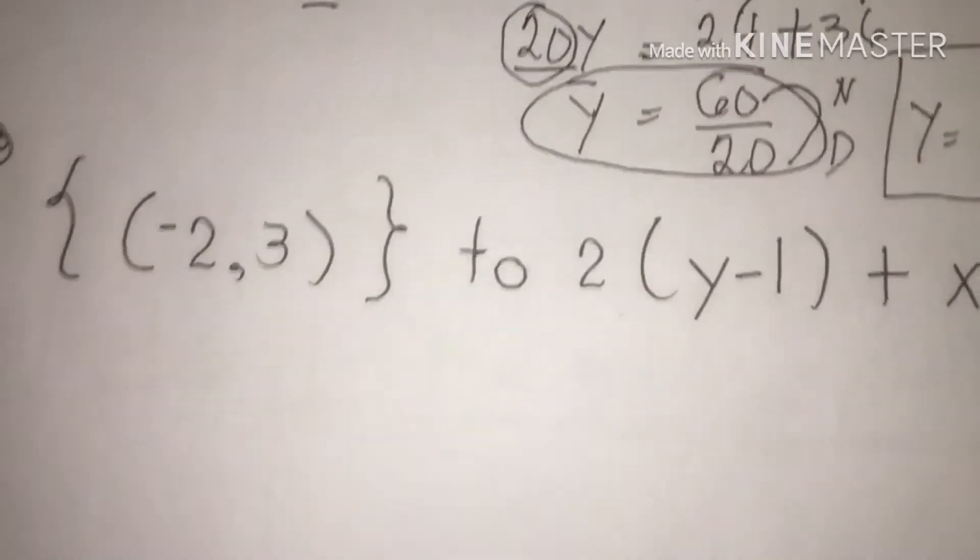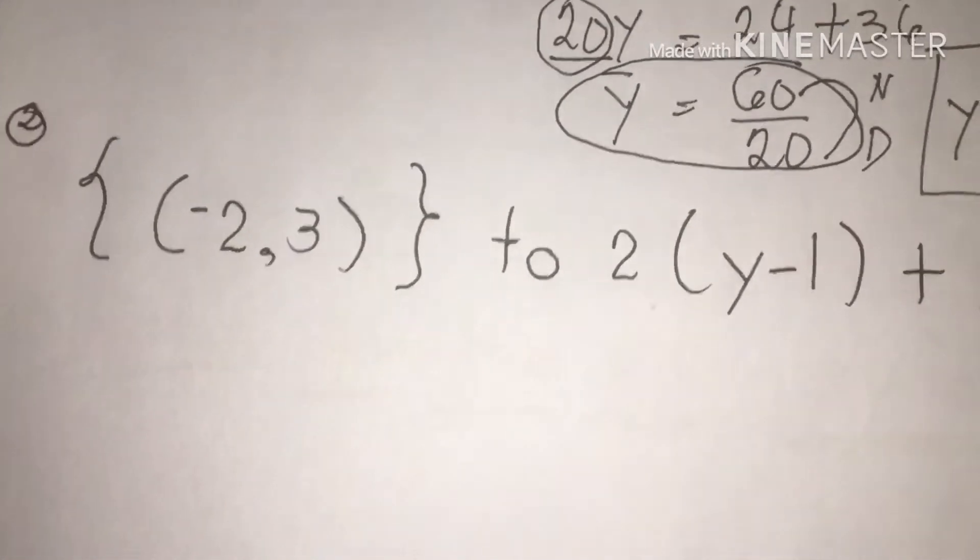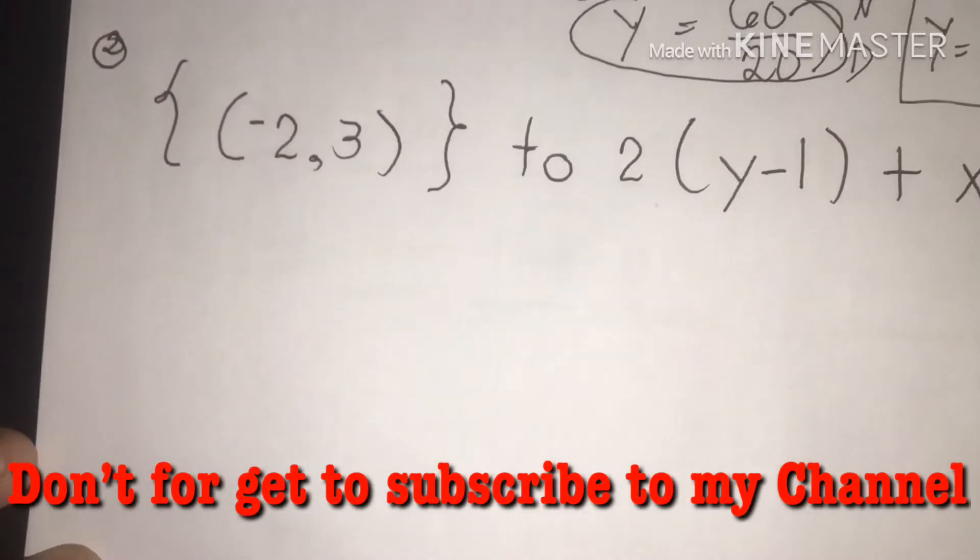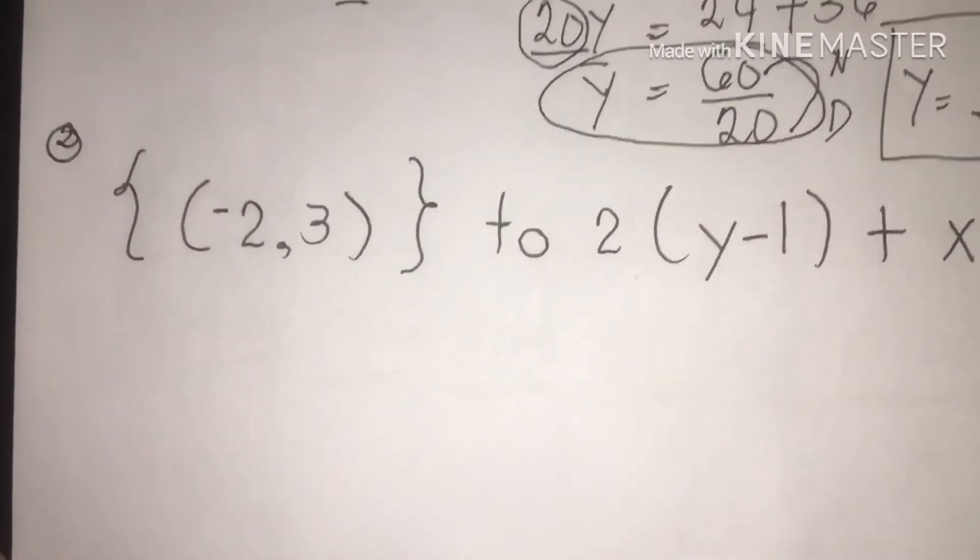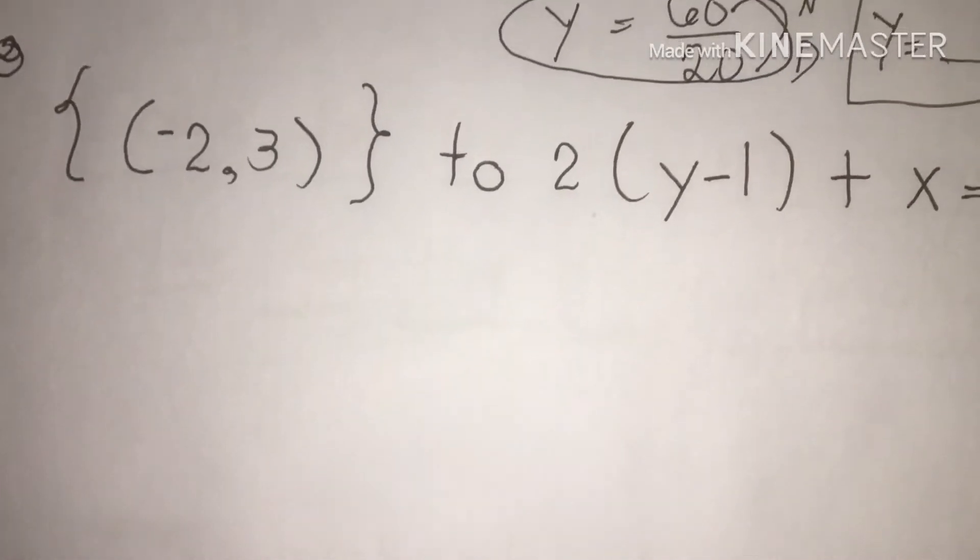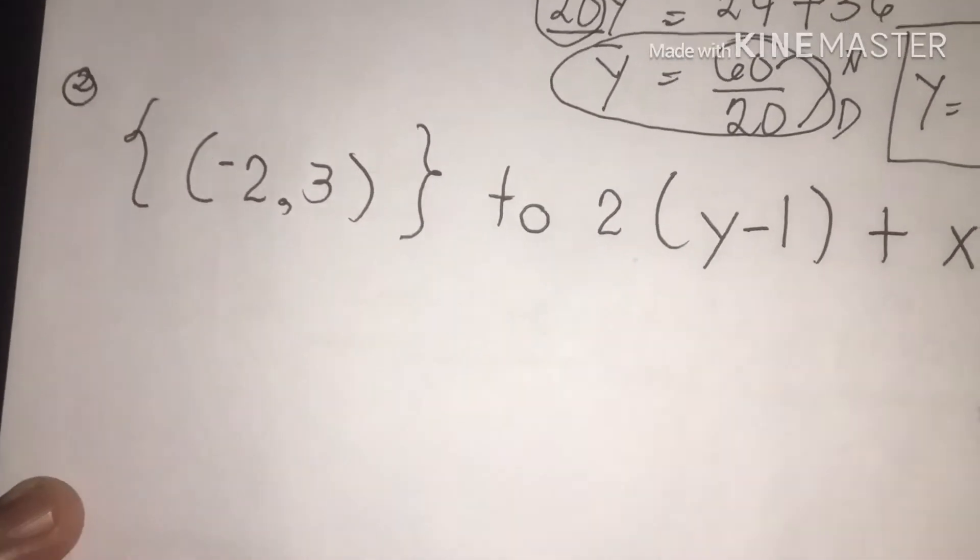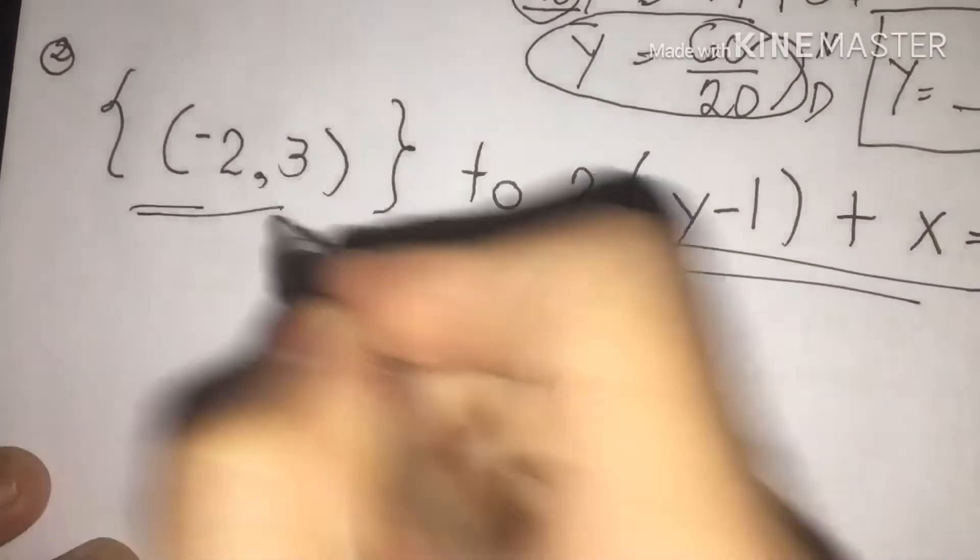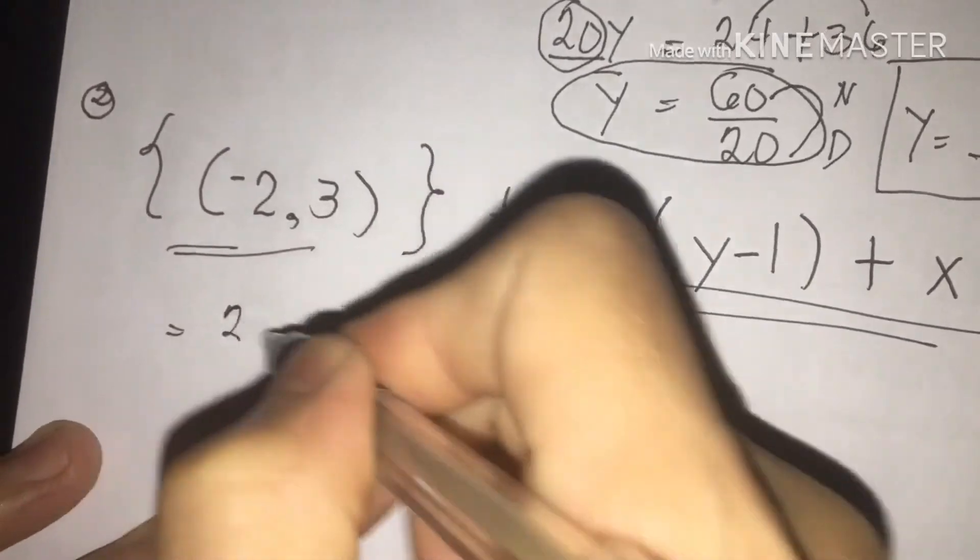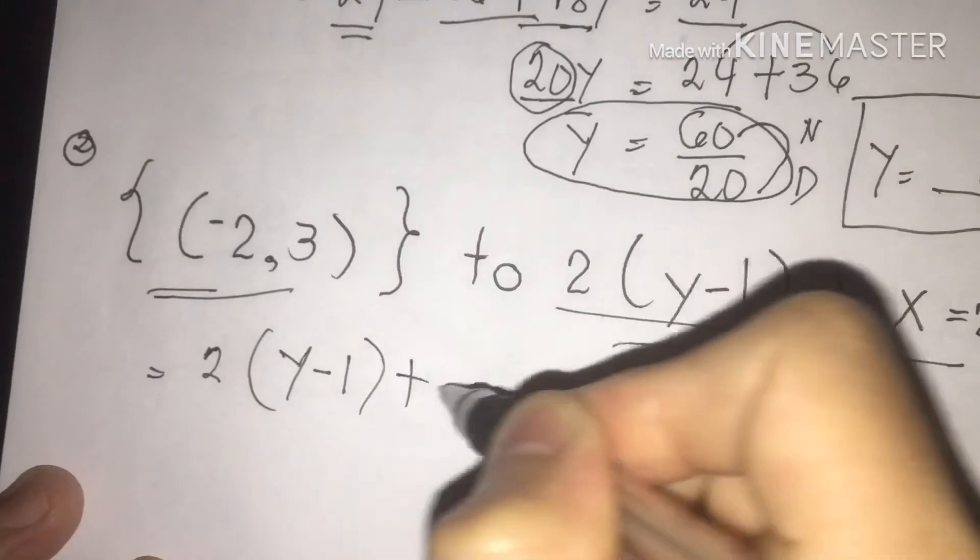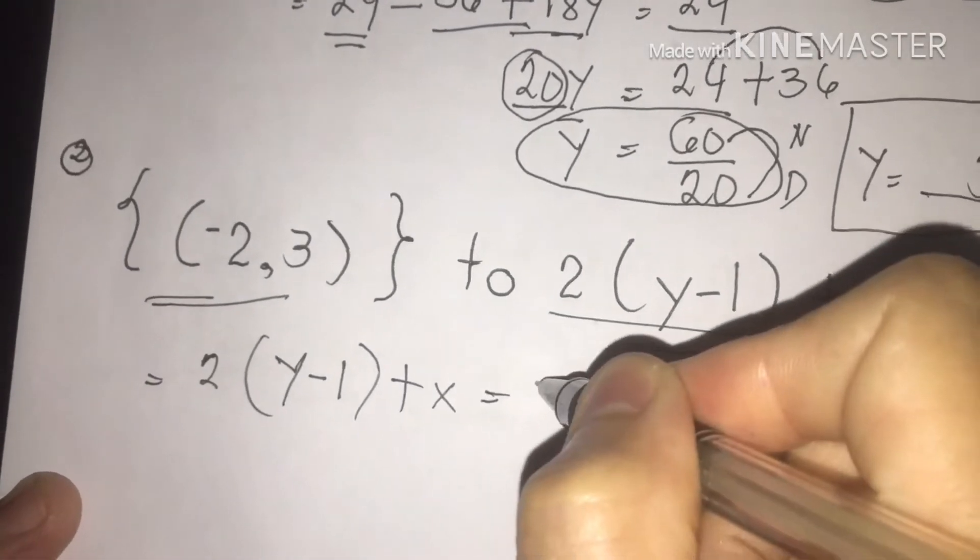For number 2 class we have: given for number 2, we have negative 2 and positive 3. Then, close and open parenthesis y minus 1 plus x is equal to 2. We are going to write. First, 2, then y minus 1 plus x is equal to 2.